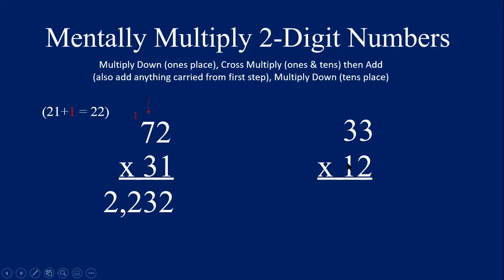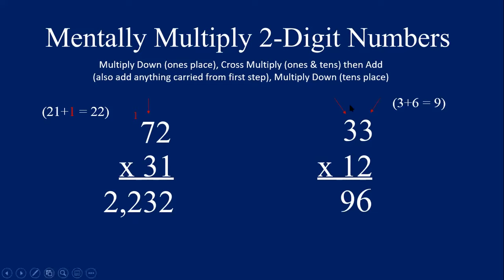Let's try 33 times 12. First step: multiply down in the ones place — 3 times 2 is 6. Cross multiply and add: 3 times 1 is 3, and 3 times 2 is 6, so 3 plus 6 equals 9. Nothing to carry — 9 goes in the tens place of the answer. Last step: multiply down in the tens column — 3 times 1 is 3, write a 3 in the hundreds place. The answer to 33 times 12 is 396.